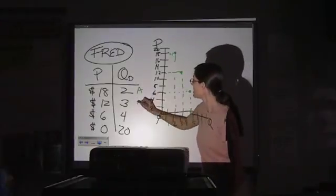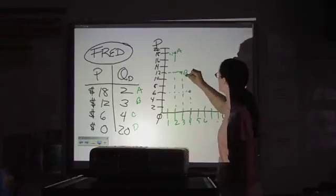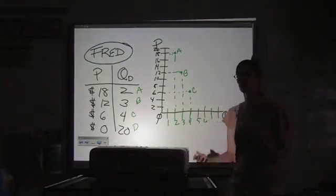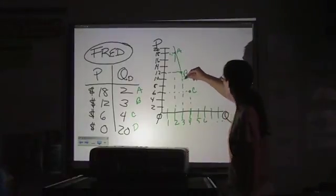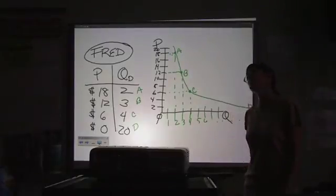So, let's name these: A, B, C, D. And D is somewhere out here. Now, if we connect these points, because the 0 is way out here somewhere, we get kind of a weird-looking demand curve for Fred.